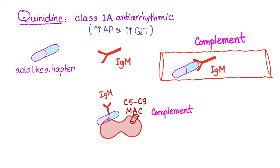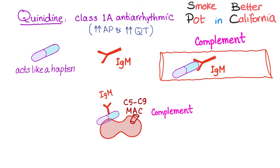Story number three: Quinidine. It's a class 1A antiarrhythmic — it increases the action potential duration and prolongs the QT interval. Reviewing antiarrhythmic classes: class 1 is sodium channel blocker, class 2 is beta blocker, class 3 is potassium channel blocker, and class 4 is calcium channel blocker.